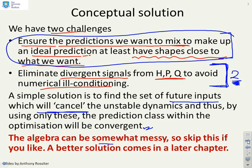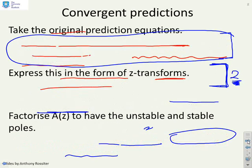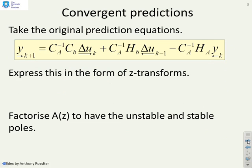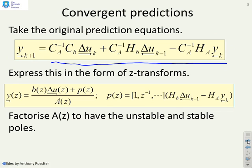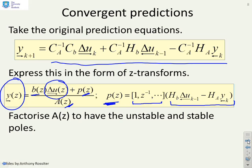The algebra can be somewhat messy, and since the more modern solution comes in a later chapter, I'll only spend a couple of minutes on historical methods. Starting from the CARIMA prediction equations derived earlier and expressing them in Z-transforms: the Z-transform of the output prediction can be written as B(z) times the Z-transform of future control increments, plus P(z) over A(z), where P(z) depends only on past inputs and past outputs and is straightforward to define.